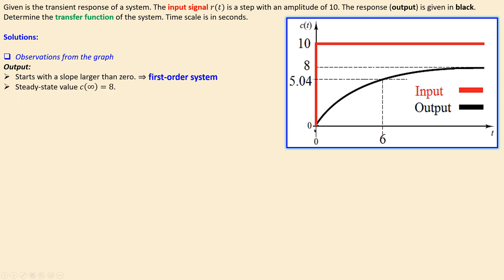I also see the steady state value is 8 — that is another observation from this plot. And I also see that at a specific time of 6 seconds, I have a value of 5.0804. So that's what we have, and these are the data we will use to determine the transfer function.